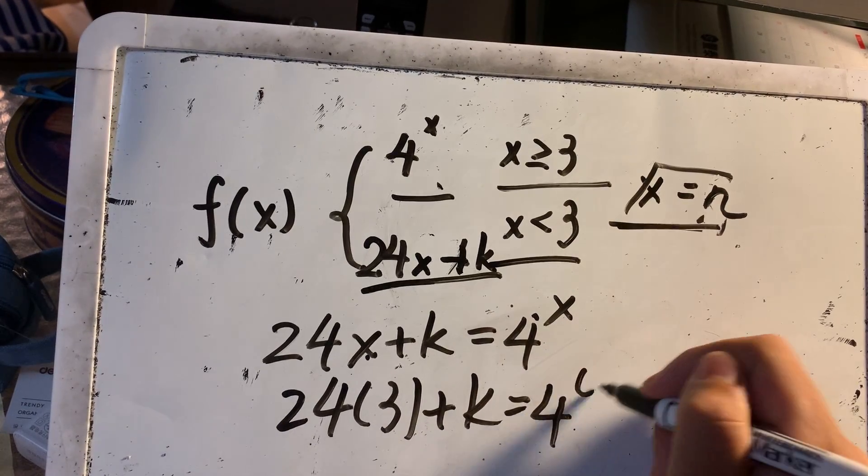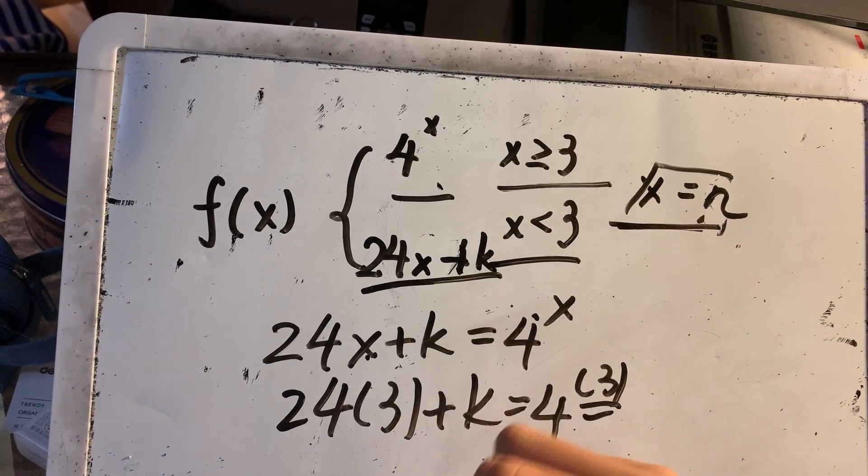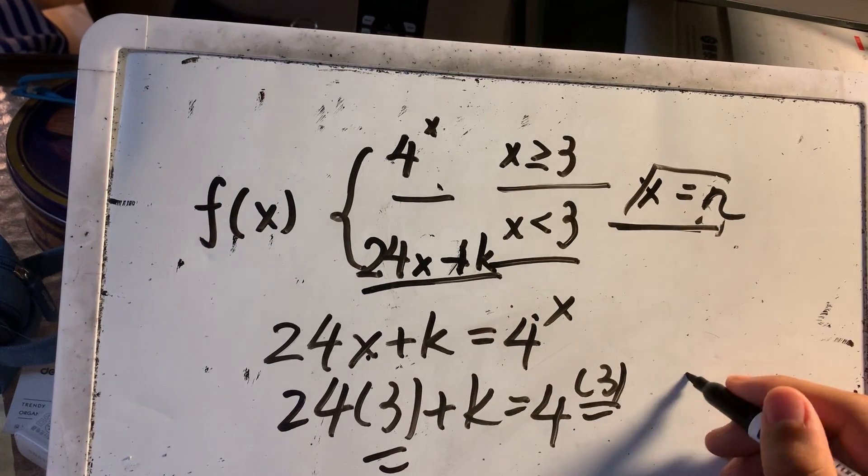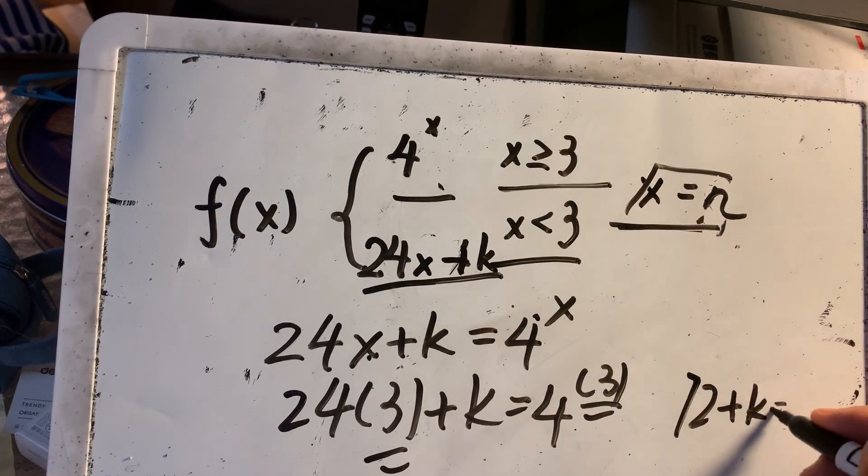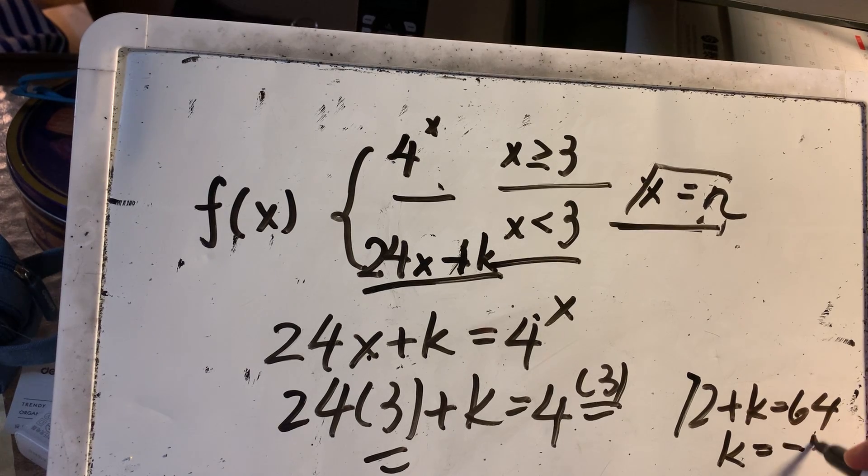Do you remember? After that, we plug in x equals 3. And we know 72 plus k equals 64, and k equals negative 8.